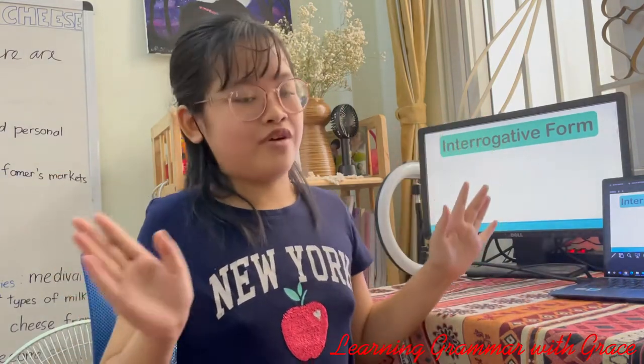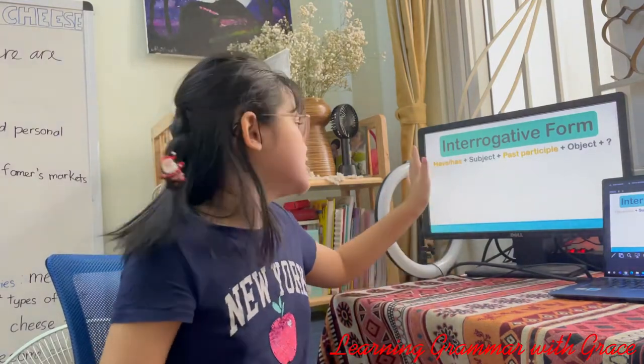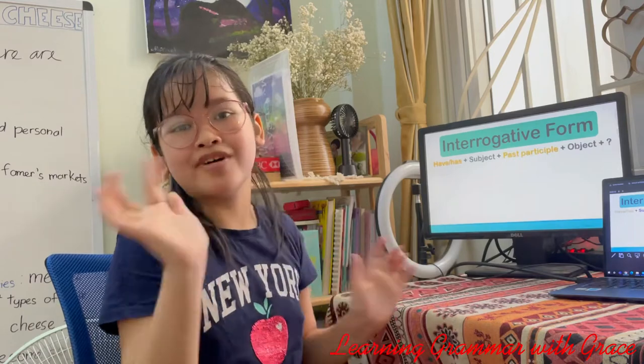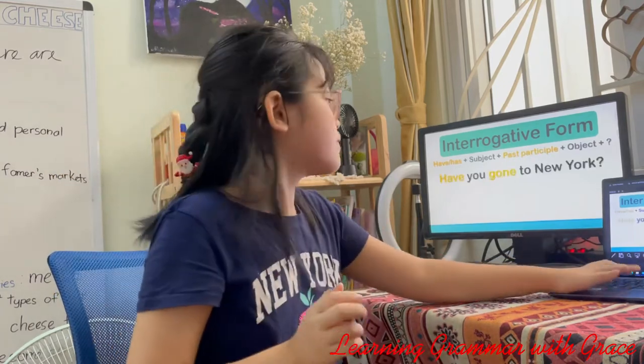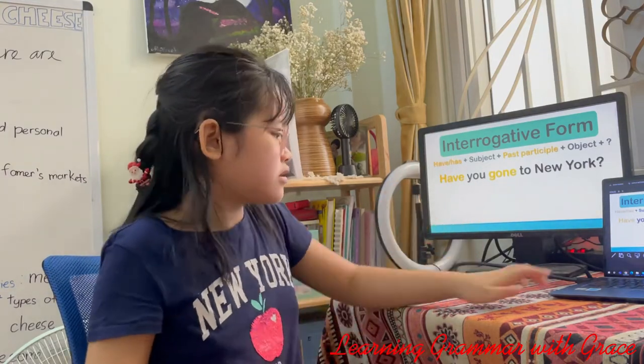The last form is the interrogative form. The interrogative form has: have or has, plus subject, plus past participle, plus object — and don't forget the question mark. For example: Have you gone to New York? I don't think I have gone to New York yet.